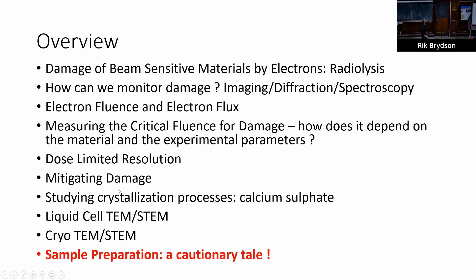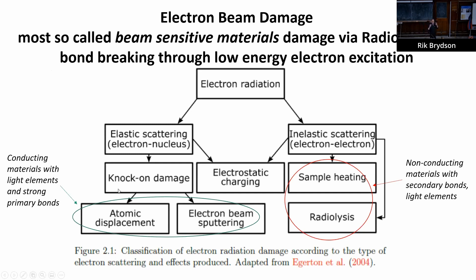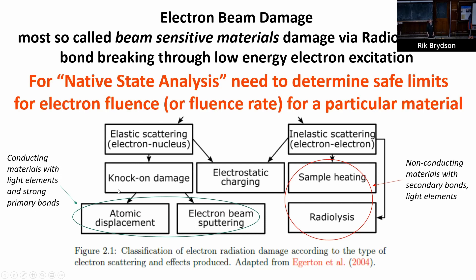Most beam-sensitive materials damage by a mechanism known as radiolysis, which is really ionization. It's very low-energy electrons that are being excited — typically a few eV — and they can essentially ionize and break bonds. That's true for most really beam-sensitive specimens. If we want to analyze something in its pristine native state, we've got to determine the safe limits for either the electron fluence — electrons per unit area — or the flux.